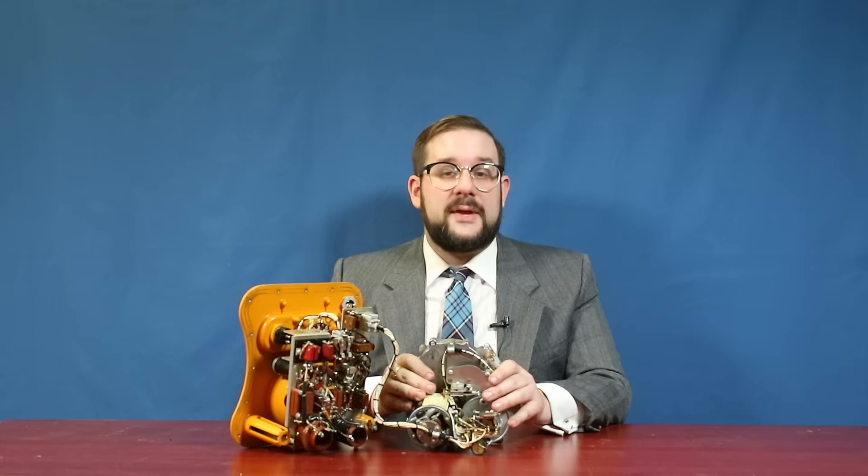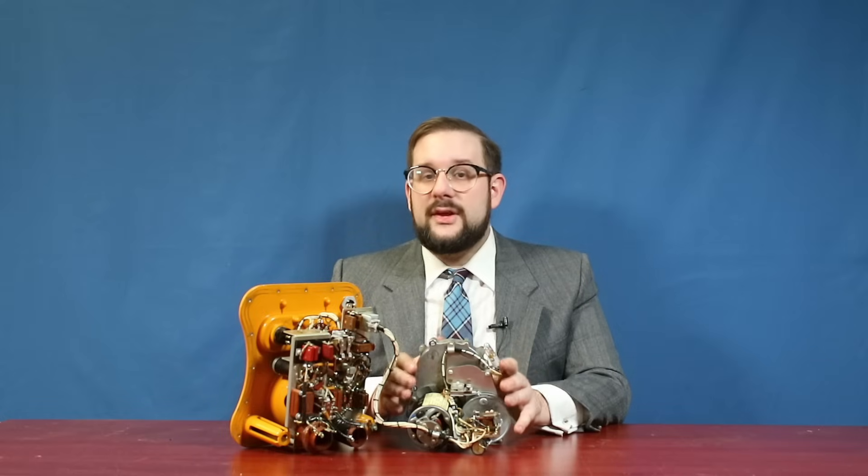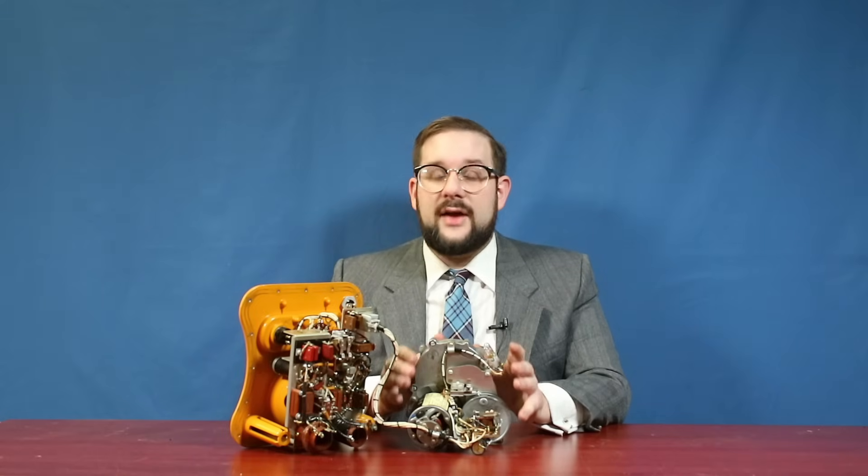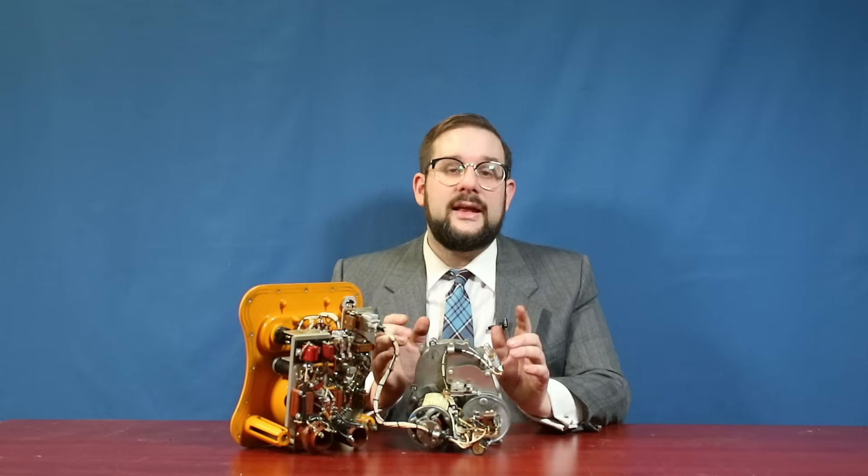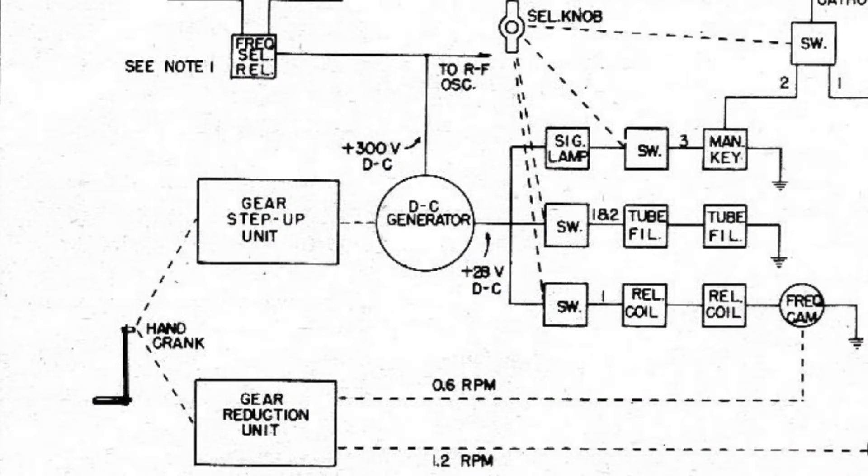Right, so let's move on to the post-war AN-CRT3 radio, which comes apart just like the SCR578. So as I mentioned at the beginning of the video, there are a number of major differences between the older SCR578 radios and the later AN-CRT3, including the gear train on the power source.